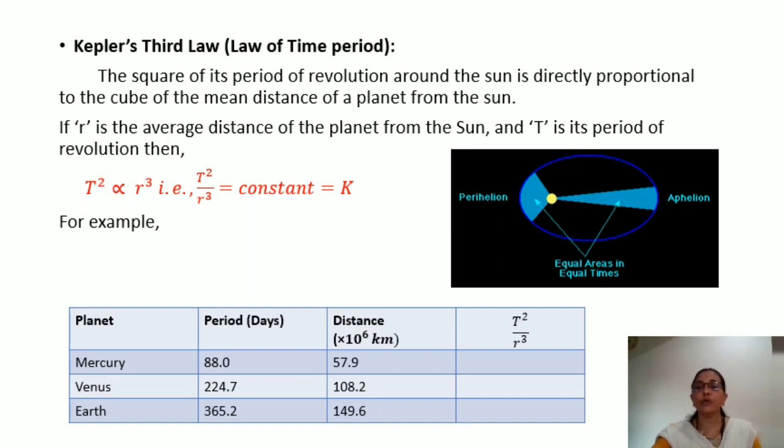This is directly proportional to the cube of the mean distance of a planet from the sun. Mean distance, the distance of the planet from the sun. So, the distance of our earth from the sun is 149.6 multiplied by 10 raised to 6 kilometer.